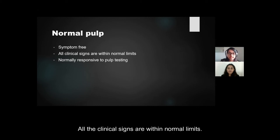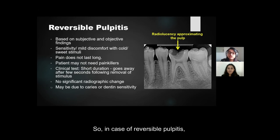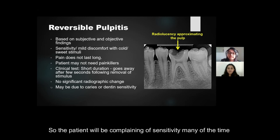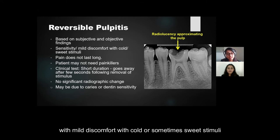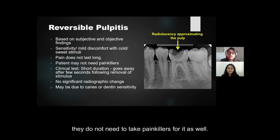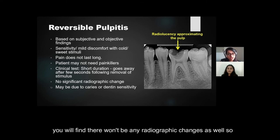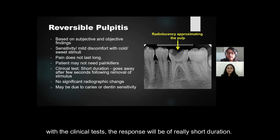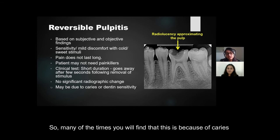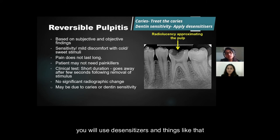For a normal pulp, the tooth responds normally, is symptom-free, and all clinical signs are within normal limits with a normal response to pulp testing. In reversible pulpitis, based on objective and subjective findings, the patient complains of sensitivity — mild discomfort with cold or sometimes sweet stimuli — of short duration that does not linger. They may not be taking painkillers. Thermal tests show a response of very short duration following removal of the stimulus, and there are usually no radiographic changes. This is often caused by caries, which is treated, or dentine sensitivity, which is managed with desensitizers.